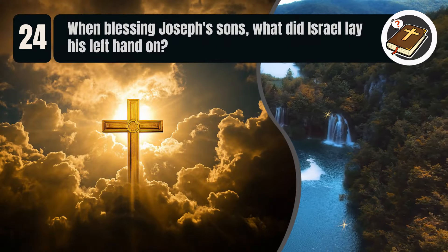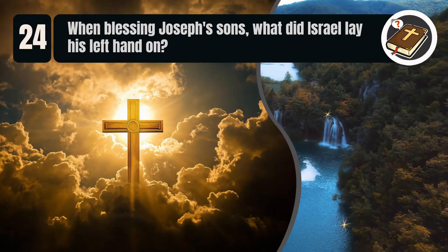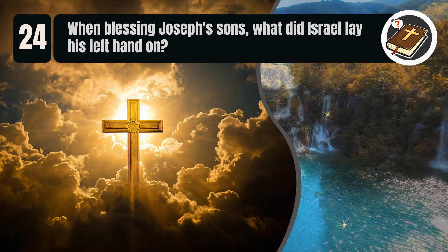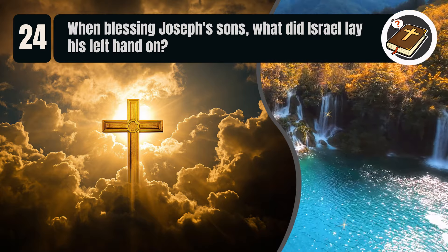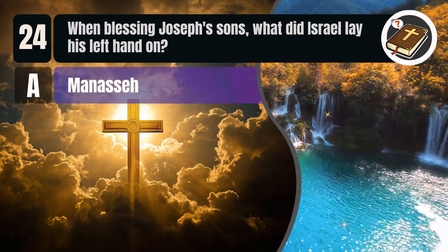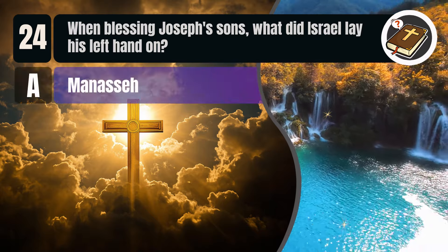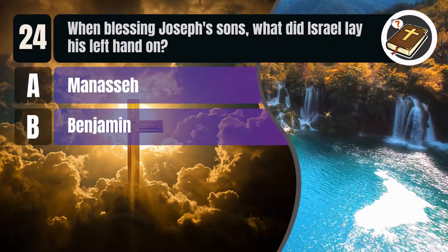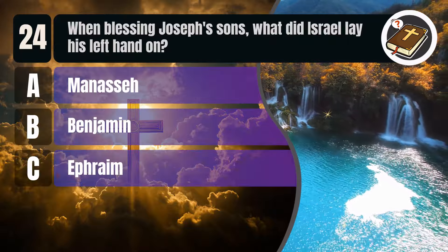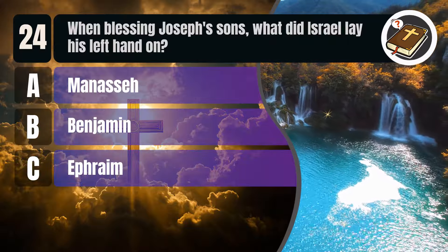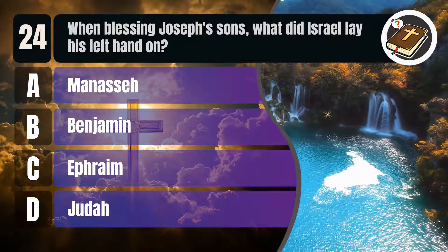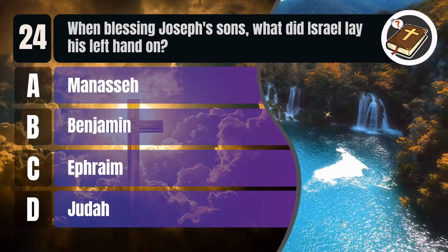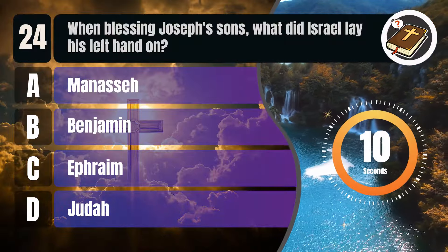Question 24. When blessing Joseph's sons, what did Israel lay his left hand on? A. Manasseh. B. Benjamin. C. Ephraim. D. Judah.